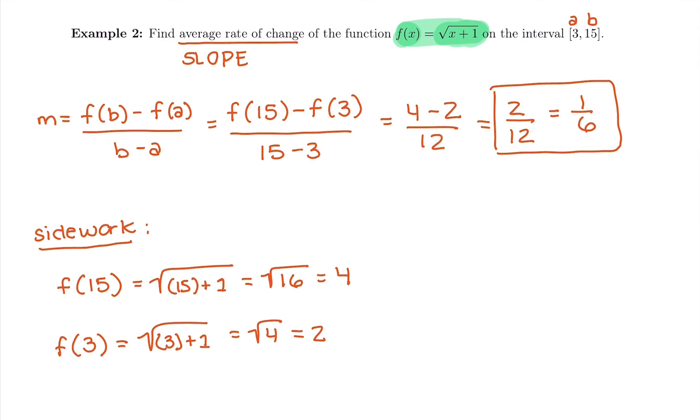And normally, average rate of change, you would want to put two units on this. I would just write yourself a reminder. We weren't given units here, but this could be 1/6 mile per minute or something like that. So it would have two units on it if we were given them.